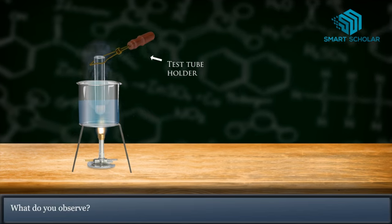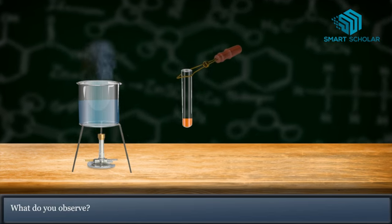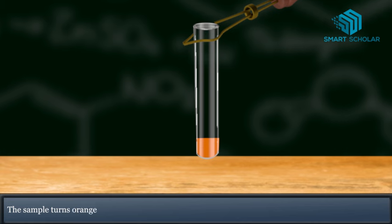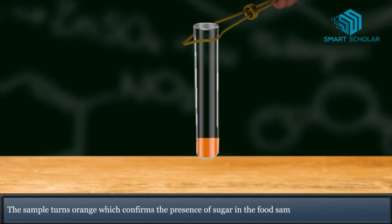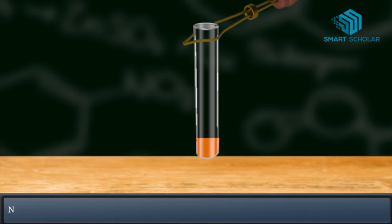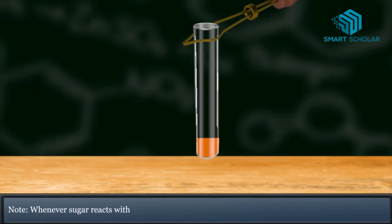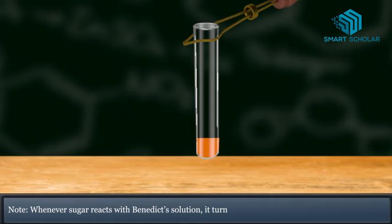What do you observe? The sample turns orange, which confirms the presence of sugar in the food sample. Whenever sugar reacts with Benedict's solution, it turns orange.